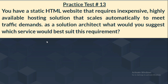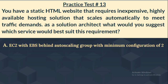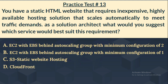Option A: EC2 with EBS behind an autoscaling group with a minimum configuration of 2. Option B: EC2 with EBS behind an autoscaling group with a minimum configuration of 1. Option C: S3 static website hosting. Option D: CloudFront.